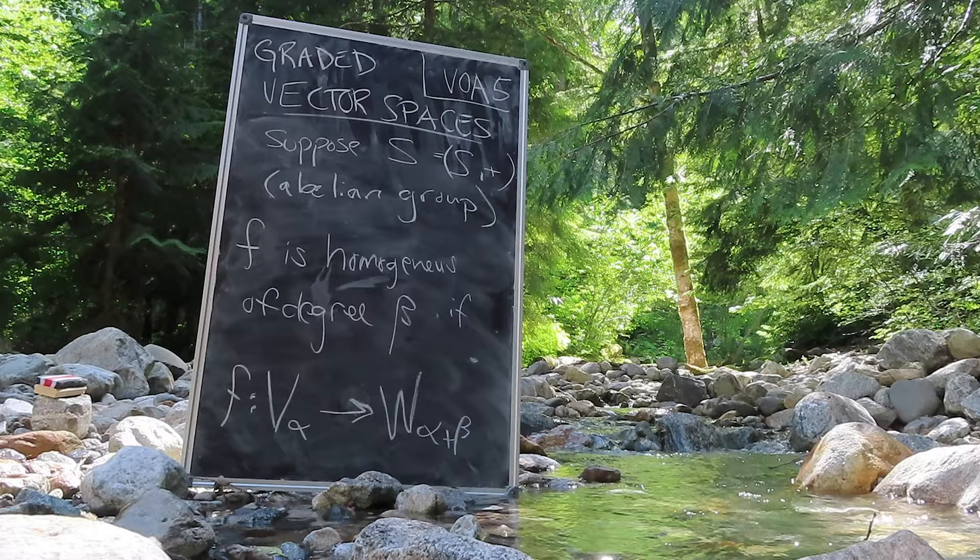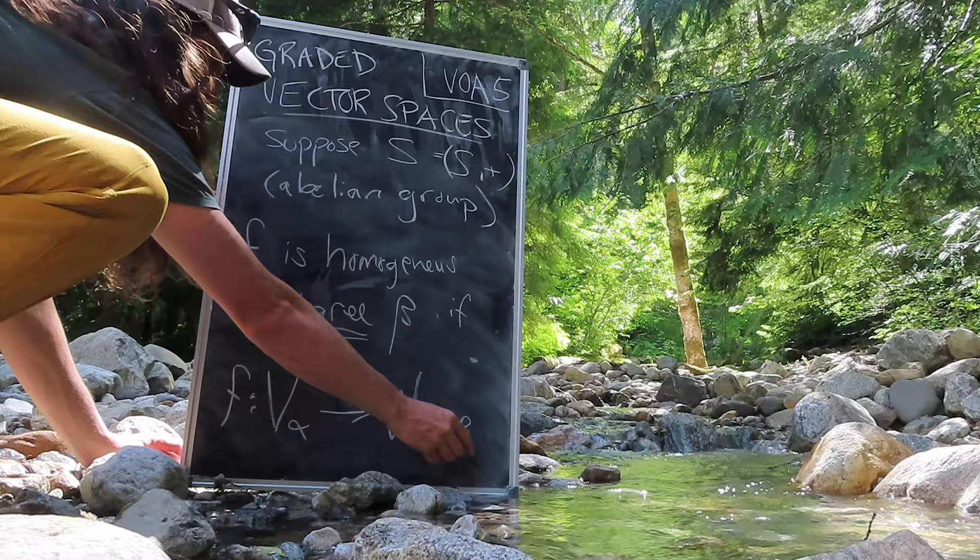We can think about it more categorically. Vector spaces are homogeneous of a fixed degree, and the degree of a map is how much that map changes the degree of a given vector subspace.